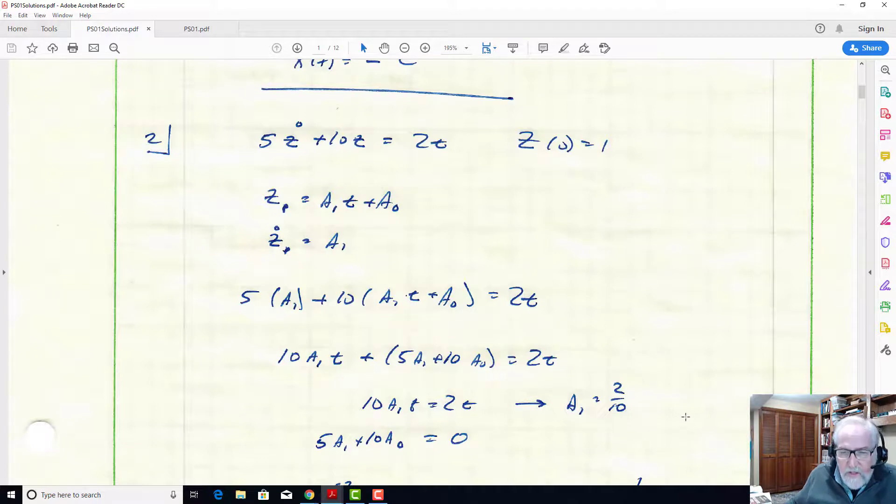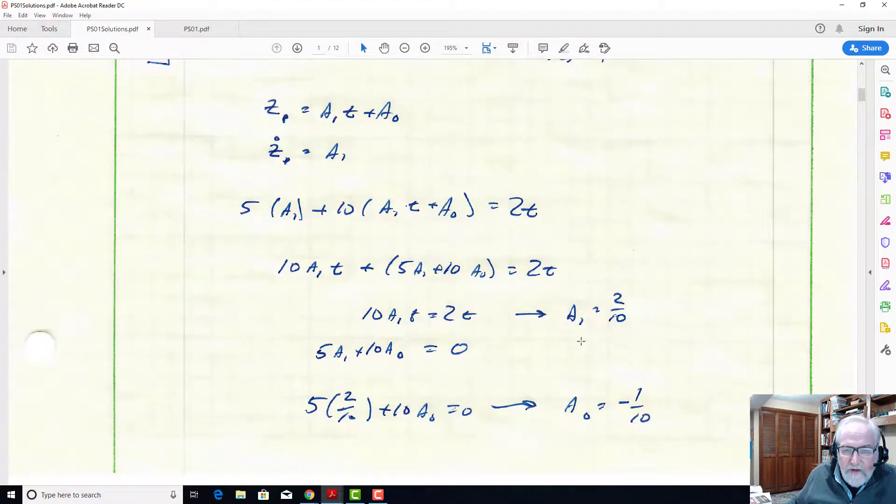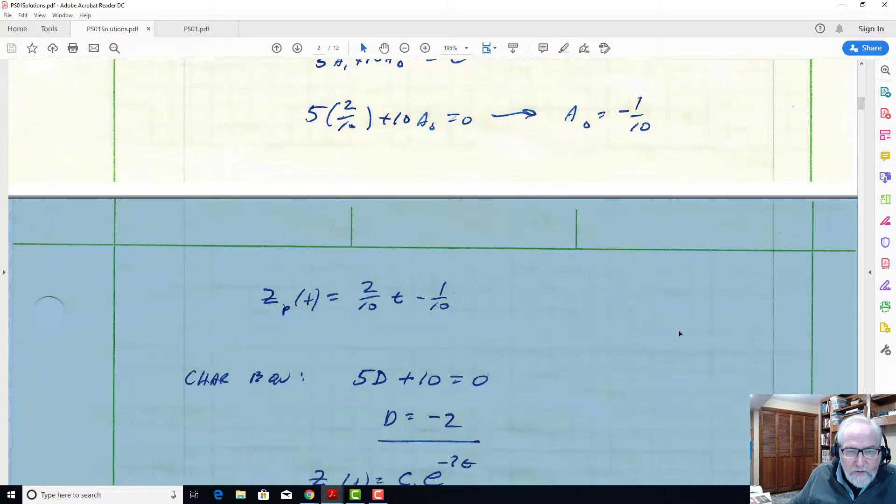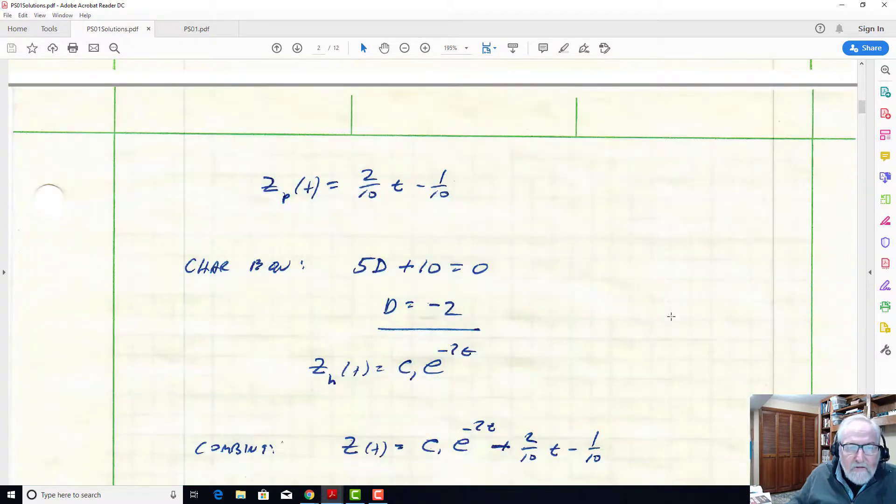And then these terms gathered here on the constant have to equal 0. So we have two equations, two unknowns, but they're somewhat decoupled. We can find a1 directly as 2/10, plug that into the second equation, and we get minus 1/10. So we've now solved the particular solution and it is 2/10*t minus 1/10.